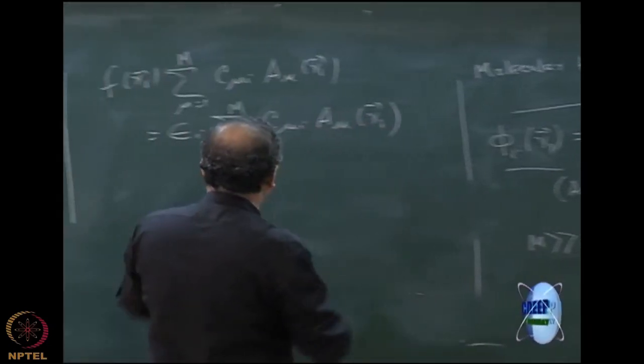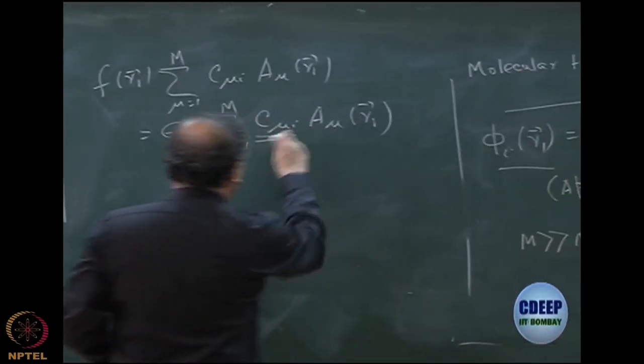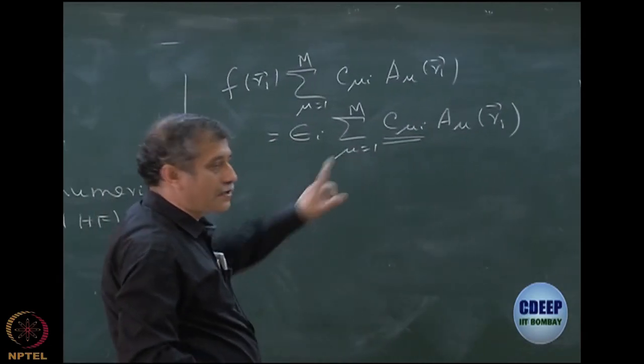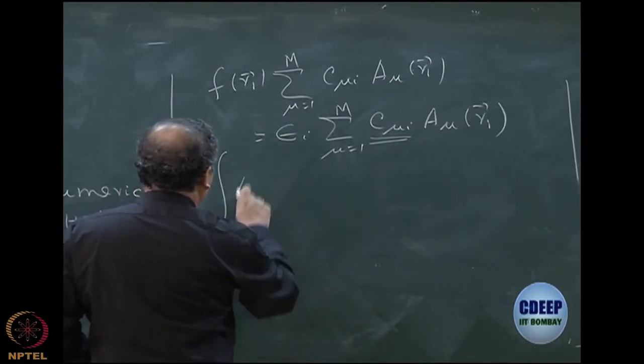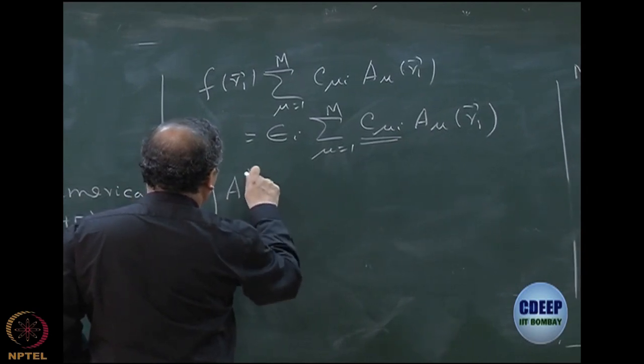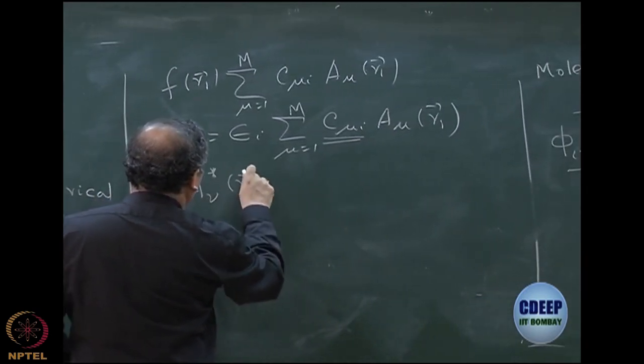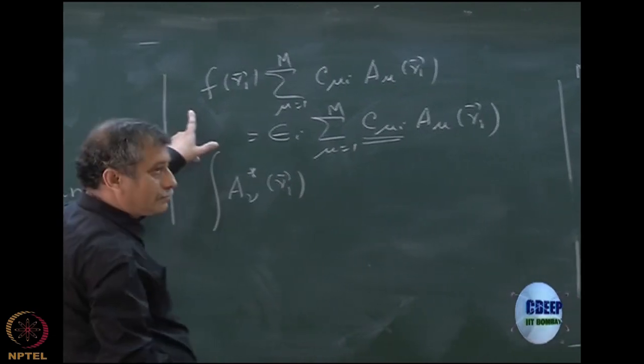So with this I put this here. So my targets are now these coefficients, I have to find out this coefficient. So what you do is the following: multiply this function by one member of the basis, let's say A nu star R1. F of R1.